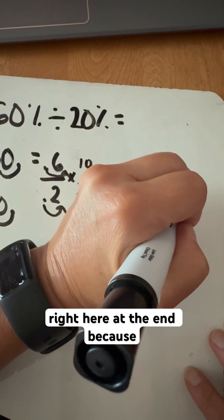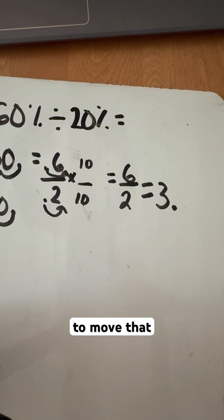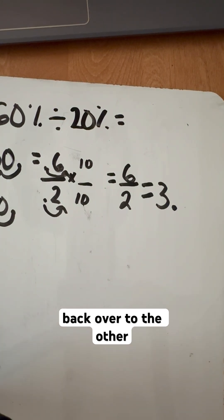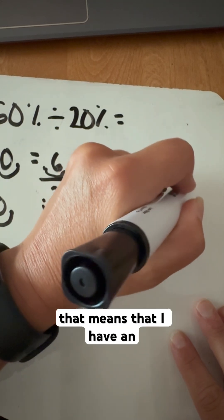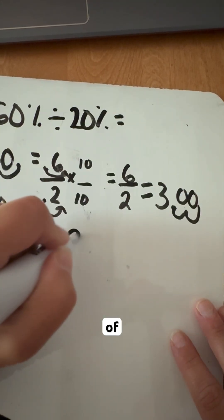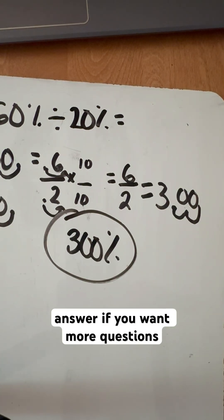So I'm going to put a decimal right here at the end because there is none here. So you always put it at the end. And then I want to move that decimal back over to the other direction, two places to the right. And that means that I have an answer of 300%. And that's my finalized answer.